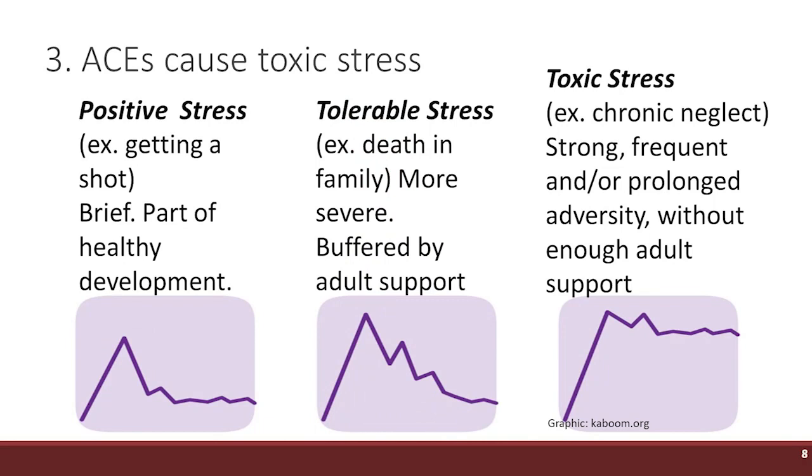Toxic stress, on the other hand, has two characteristics. One, it's capricious — these kids don't know when this bad thing is going to happen, they just know from experience that it has happened a number of times before. And two, there isn't an adult in that child's life to help mitigate or explain that stress. For example, if there's domestic violence in the household and dad is beating mom, that's stressful for the child. He can't ask dad why, because he's afraid of dad. He can't ask mom because he can tell she's very embarrassed and he doesn't want to make her feel worse. So he starts to internalize that stress without anybody to help him process it. That's what we're talking about with toxic stress.